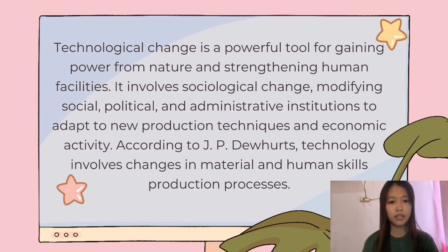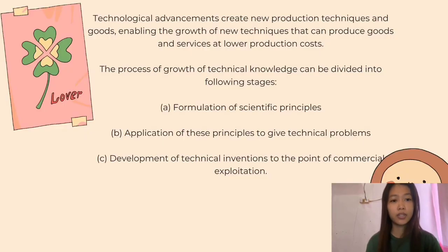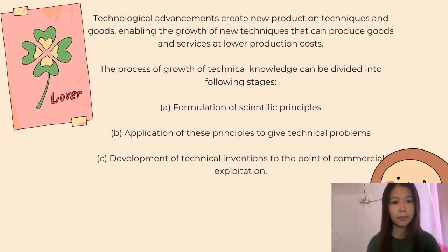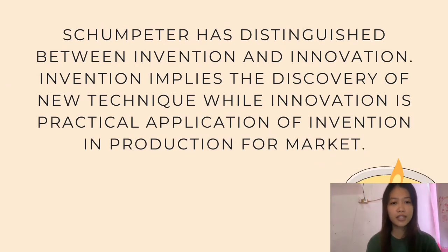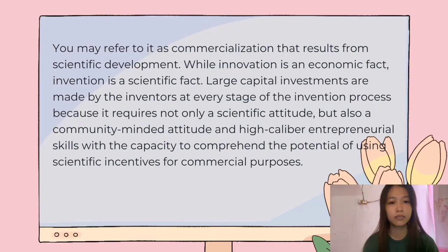According to J.P. Dewhards, technology involves changes in material and human skills and production processes. Technological advancements create new production techniques and goods, enabling the growth of new techniques that can produce goods and services at lower production costs. The process of growth of technical knowledge can be divided into stages: first is the advancement in scientific knowledge; second is the application of this knowledge to some useful purpose; and third is the commercialization of invention, which is called innovation. Sean Peter has distinguished between invention and innovation — invention implies the discovery of a new technique, while innovation is the practical application of invention in production for the market, which may also be referred to as commercialization resulting from scientific development.